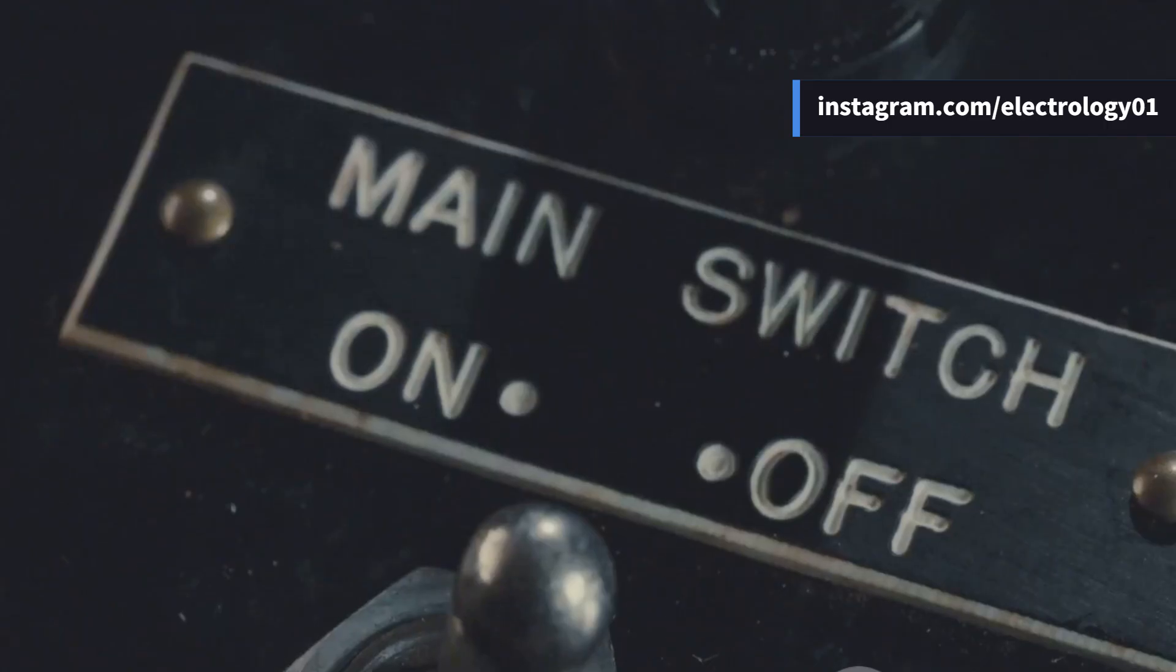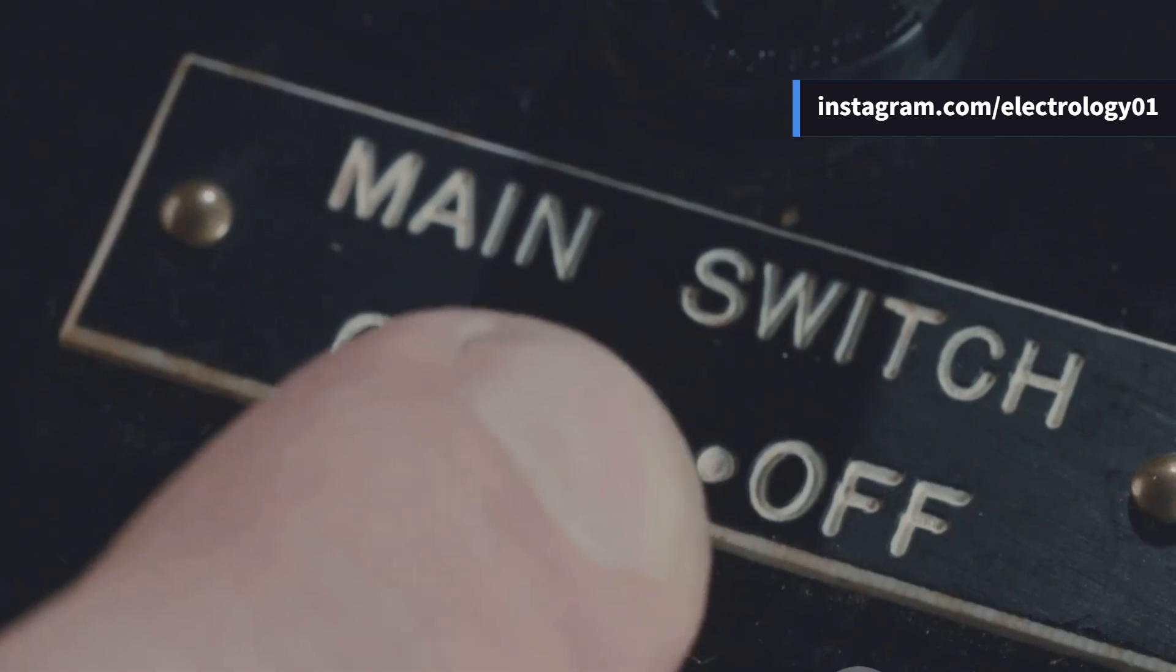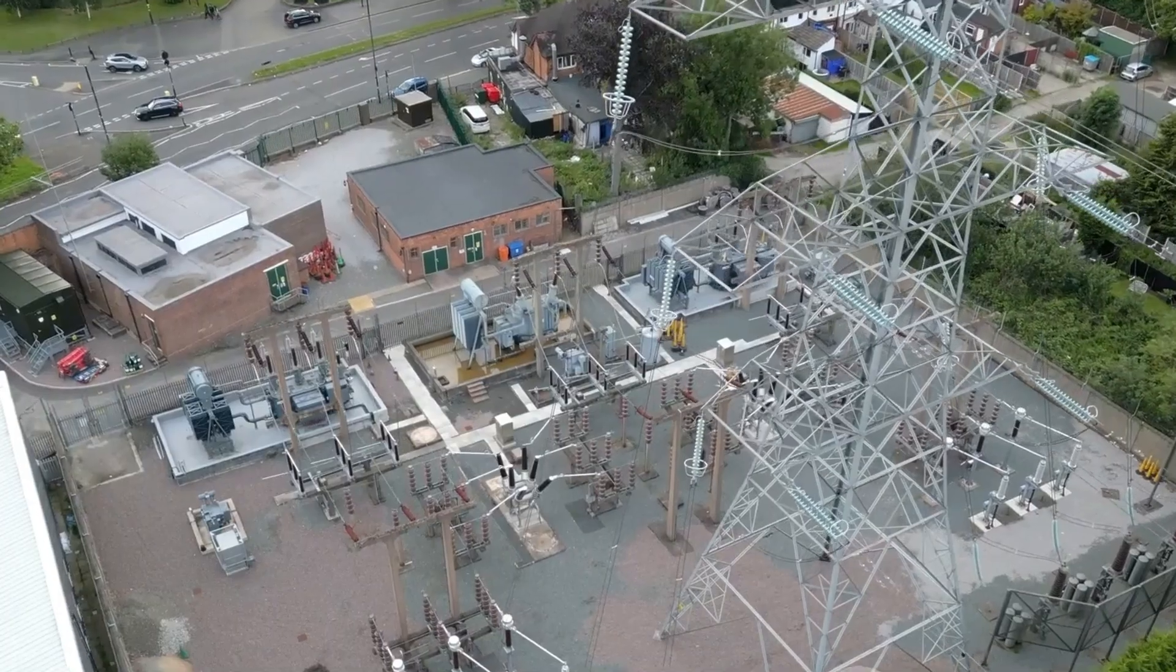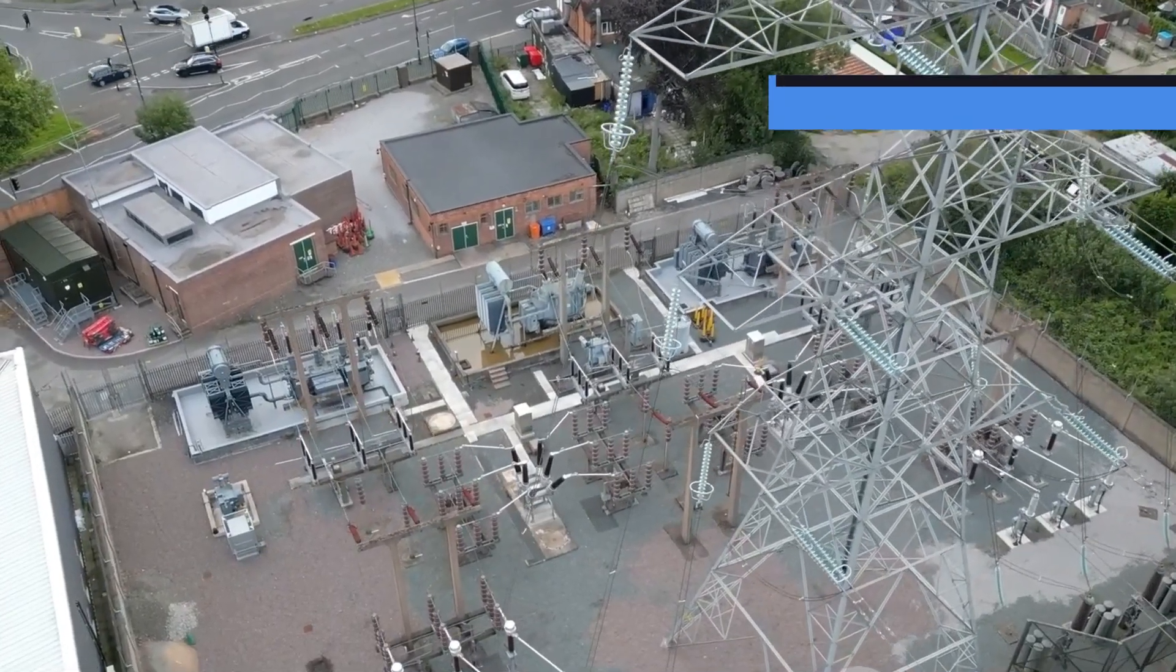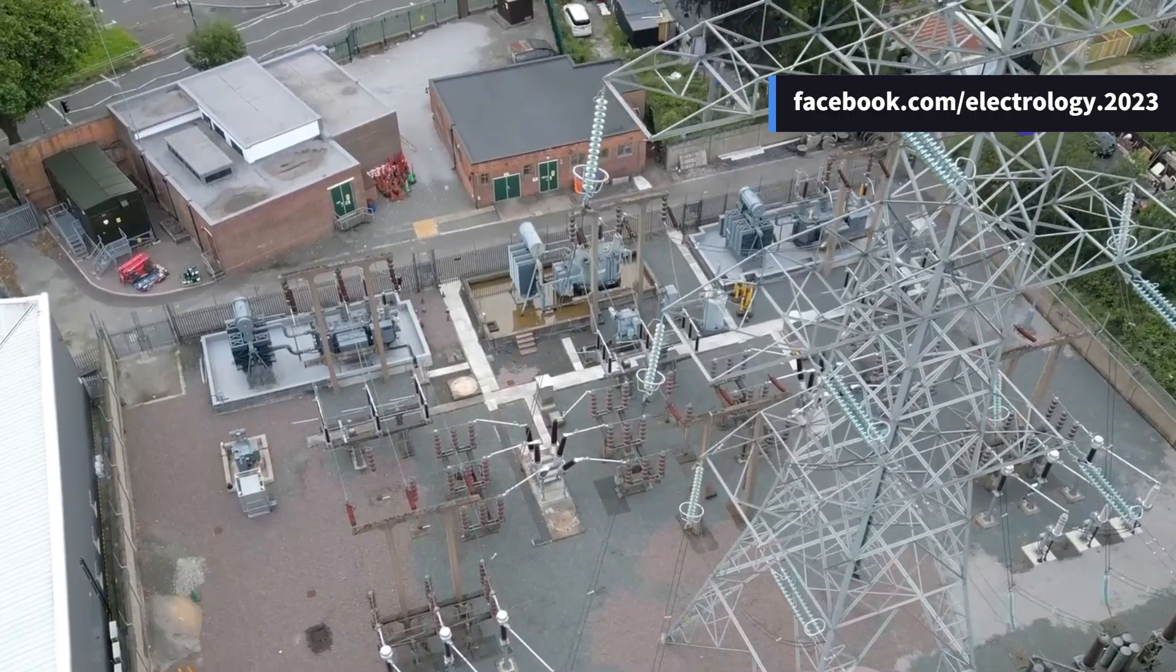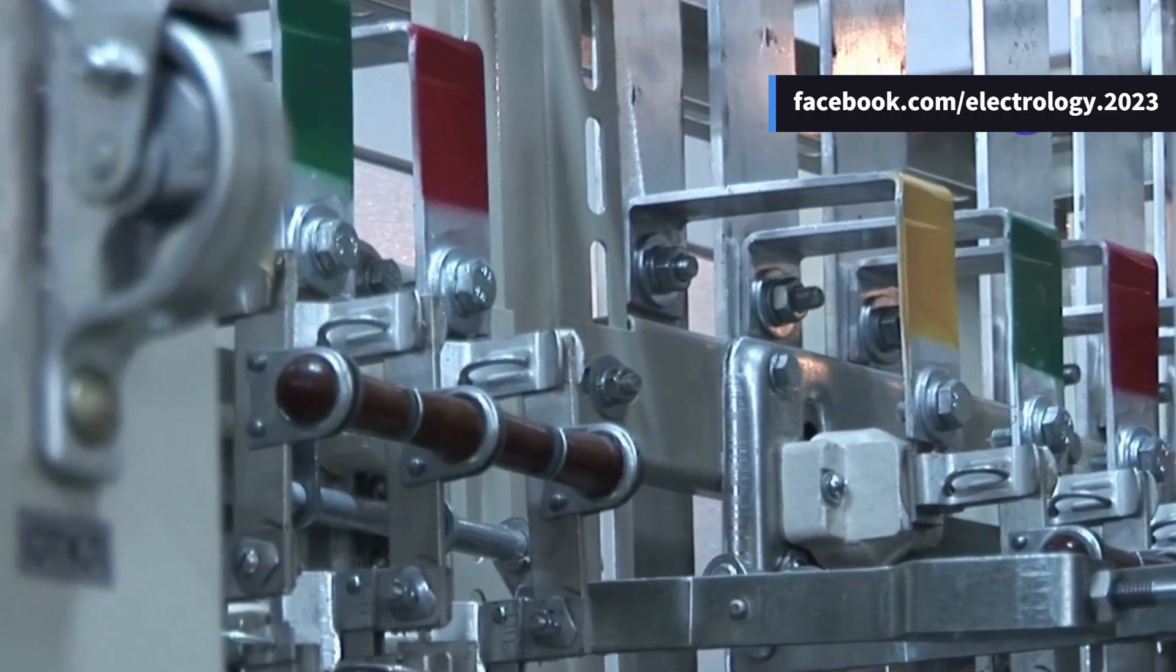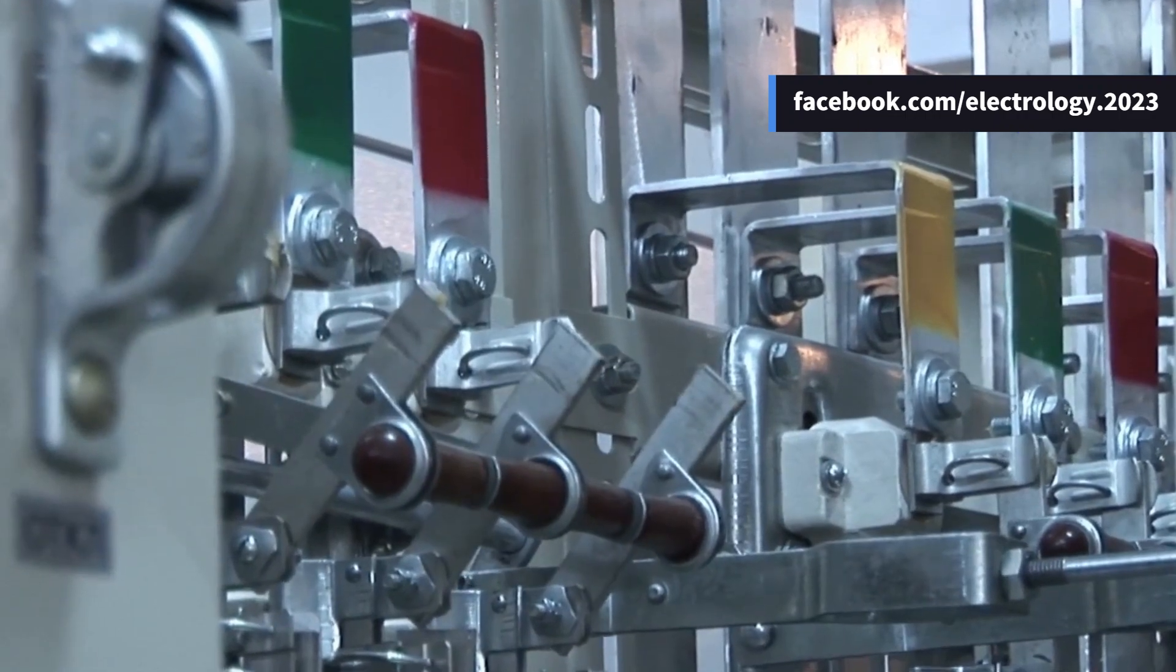By the end of this video, you will have a clear answer to this question. Let's start by understanding what the primary current injection test is. The primary current injection test is essential for high voltage and high current substations or circuits. It simply involves flowing the rated current in the circuit being tested.